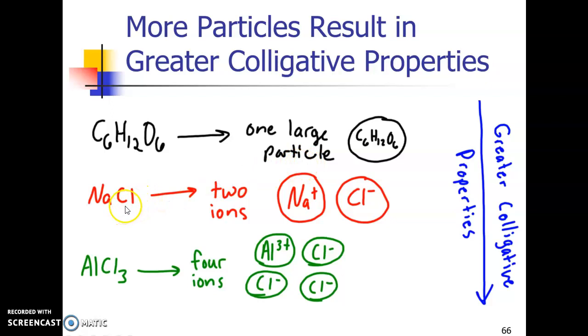Sodium chloride is an ionic compound, remember metal bonded to a non-metal. When it dissolves in water, it's going to make two ions. It's going to make a sodium ion and a chloride ion. That would be a total count of one, two particles. So that means that sodium chloride, whatever colligative properties glucose had, if they had the same concentration in molality, sodium chloride would have double those properties.